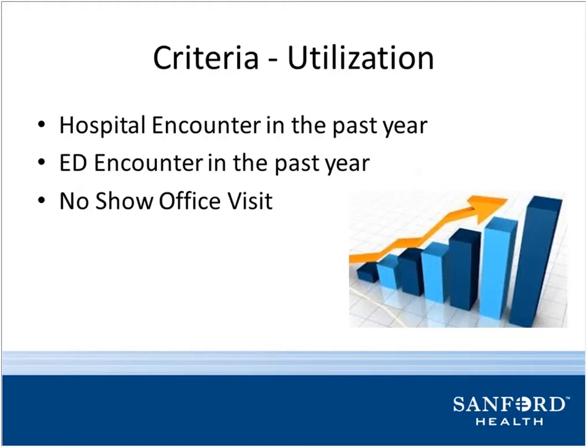The next couple of slides get into what our actual criteria is. We broke it down into different buckets. The first thing we look at is utilization — we capture the patient's hospital encounters within the past year, their ED encounters in the past year, and those no-show office visits. Behind the scenes, our EMR is pulling all of that out and calculating a score based on how many of these encounters they have had within the past year.